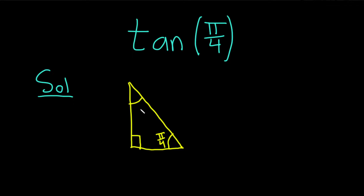I'm going to write everything in radians — this is pi over 4. This is 1, 1, and this is the square root of 2.